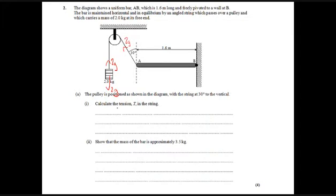OK, so calculate the tension in the string. All you've got to do is the mass 2 times gravity, 9.8, gives you a tension of 19.6 newtons. OK, showed that the mass of the bar is 3.5kg. OK, remember this is a show that, this is just to check that you've got the right answer. When you get to the end, don't use that piece of information.